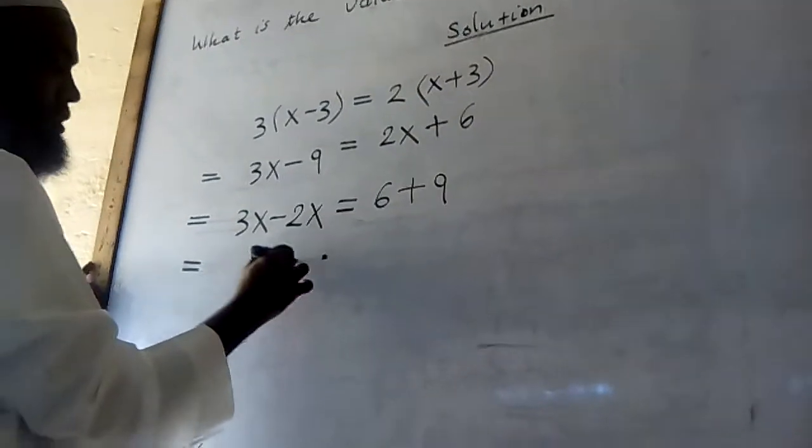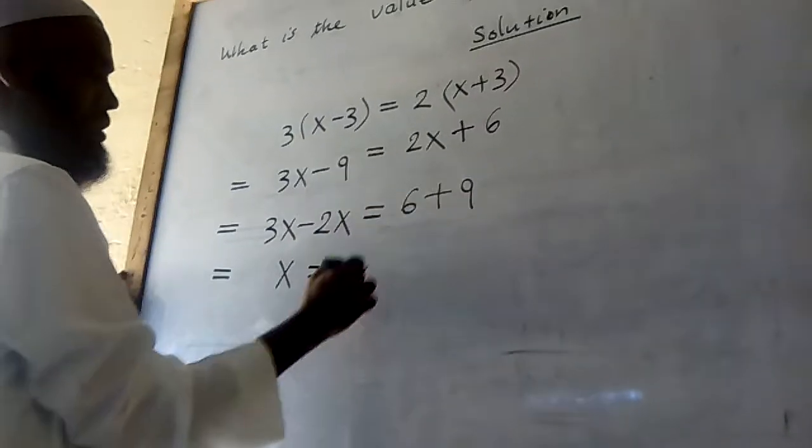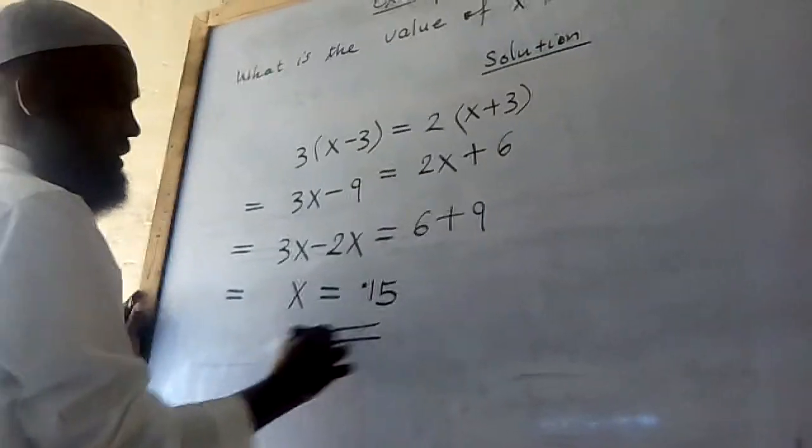Then I can get x is equal to 15. Now we're starting now. 15 divided by 2.